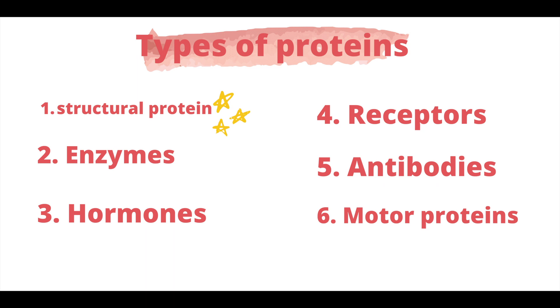Let's go over a few types of proteins. First is structural protein, which makes things hard and rigid. A good example is keratin, which forms your hair and nails and makes them hard and rigid.